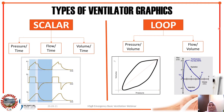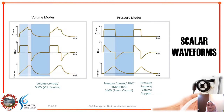Scalars are usually seen as the default waveforms on the ventilator screen, for example in your Hamilton. The second type is loop graphics, which can be either your pressure against volume curves or your flow against volume curve.